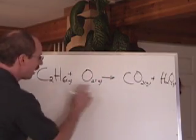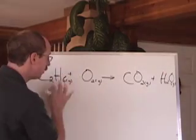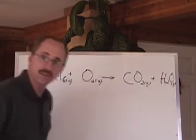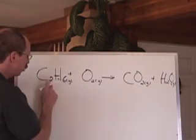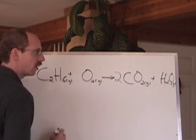Here's that ethane undergoing combustion to make CO2 and H2O. Products, reactants. Let's balance this equation. Two carbons, one carbon, so put a two in front.